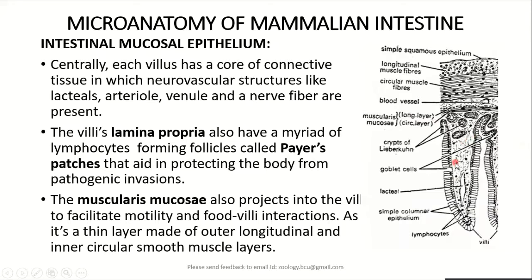Centrally, each villus has a core filled with connective tissue in which we see neurovascular structures like lacteals — small lymph vessels — along with arterioles, venules, and small nerve fibers. These villi are filled with lamina propria or connective tissue, which also lodges a large number of lymphocytes arranged in the form of follicles called Peyer's patches.